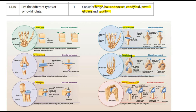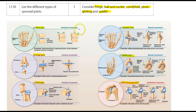Starting at the top left of the diagram, our gliding joint — these bones glide over the top of each other. In essence they allow backwards and forwards and side to side movement, however it's non-axial.